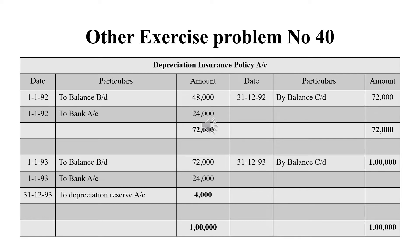In the next version, the insurance company payment of 24,000 has been made. So the total is 72,000, which has been carried down on the credit side. The grand total on both sides is 72,000. For the next year, we have brought down that balance of 72,000.